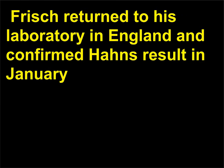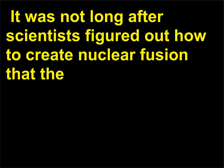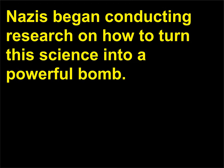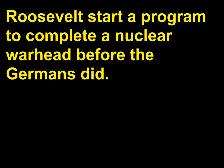The Meitner–Frisch paper was submitted a few days after Hahn's. Frisch returned to his laboratory in England and confirmed Hahn's result in January 1939. Hahn won the Nobel Prize in Chemistry for his work in 1944, but Meitner never did. It was not long after scientists figured out how to create nuclear fission that the Nazis began conducting research on how to turn this science into a powerful bomb. Albert Einstein and physicist Leo Szilard urged US President Franklin D. Roosevelt to start a program to complete a nuclear warhead before the Germans did.